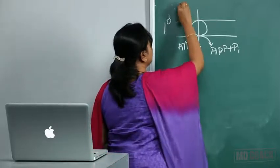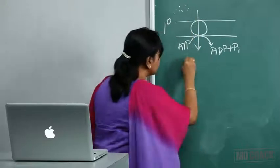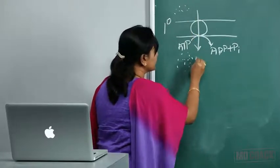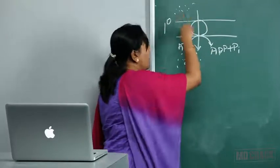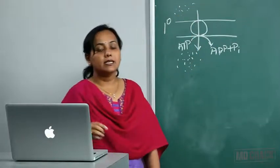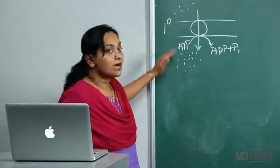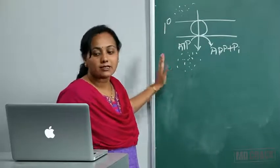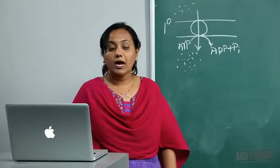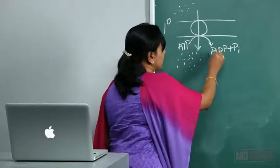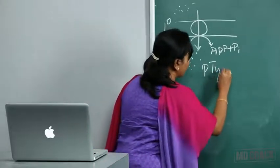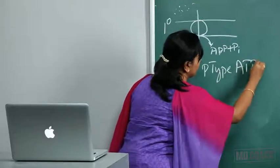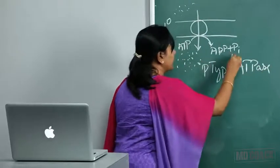Transporters that work against a concentration gradient are called ion pumps. Ion pumps are the best examples of primary active transport. These transporters, which have the capacity to hydrolyze ATP, come under the category of P-type ATPase.